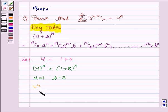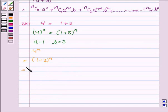4 to the power n which is equal to 1 plus 3 whole to the power n is equal to nc0 1 to the power n plus nc1 1 to the power n minus 1 into 3 plus